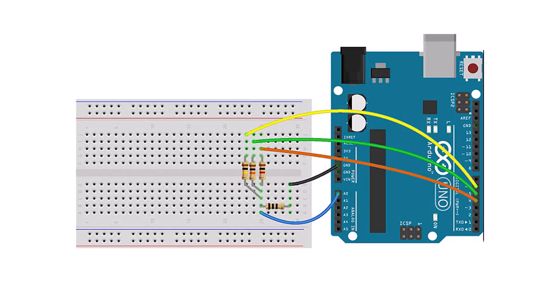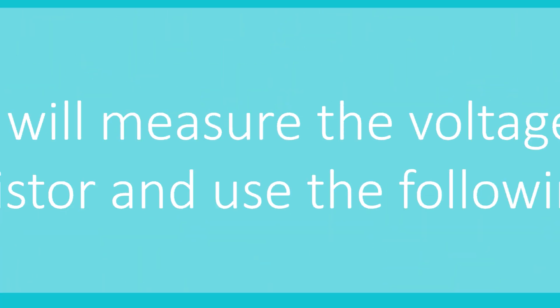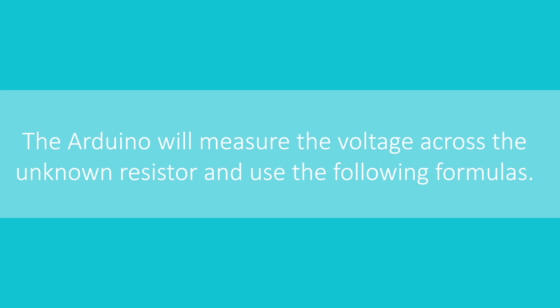Now let's move on to the creation of an ohmmeter to measure resistance. This is done by placing the unknown resistor in a voltage divider circuit with a known resistor. The Arduino will measure the voltage across the unknown resistor and use the following formula.